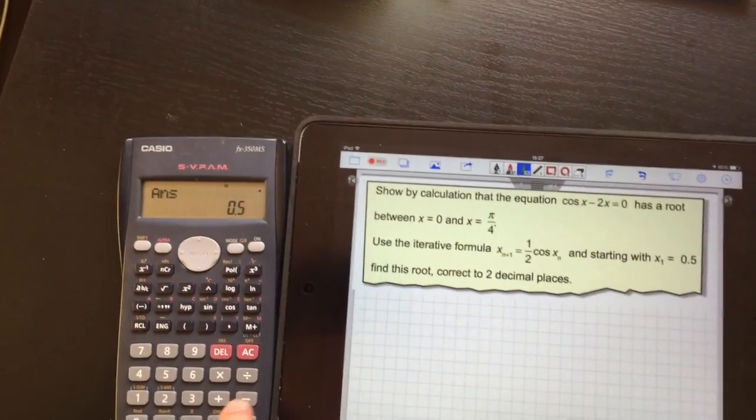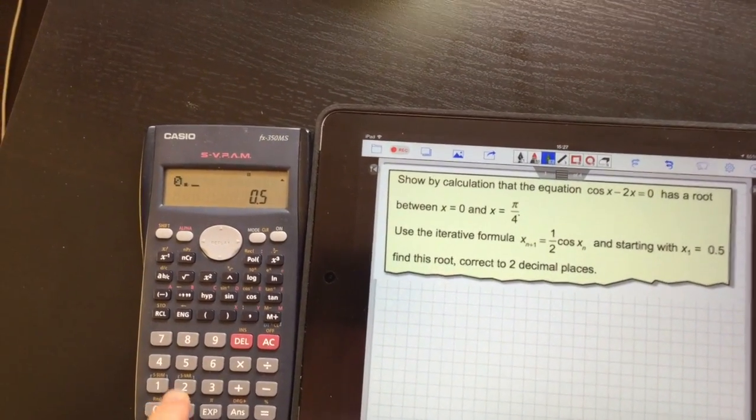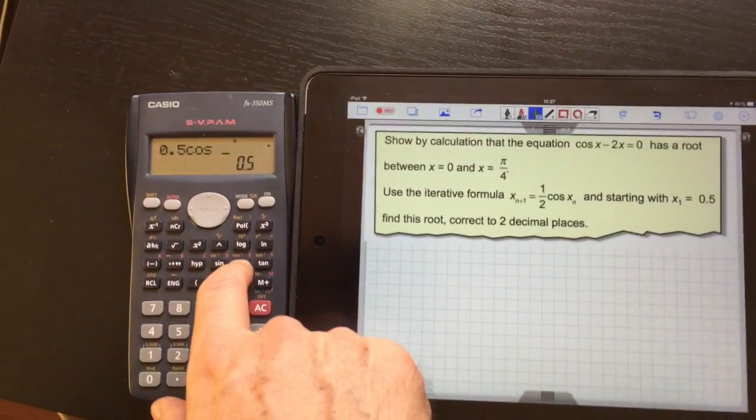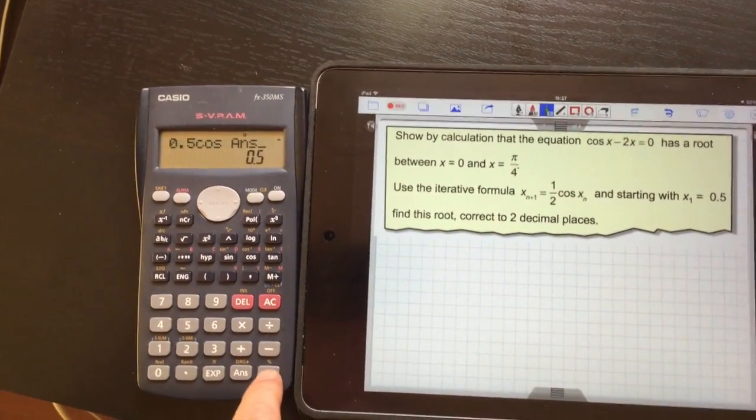Okay, press equal, and then we put in the function. So it's 0.5 cos of the answer, press equals.